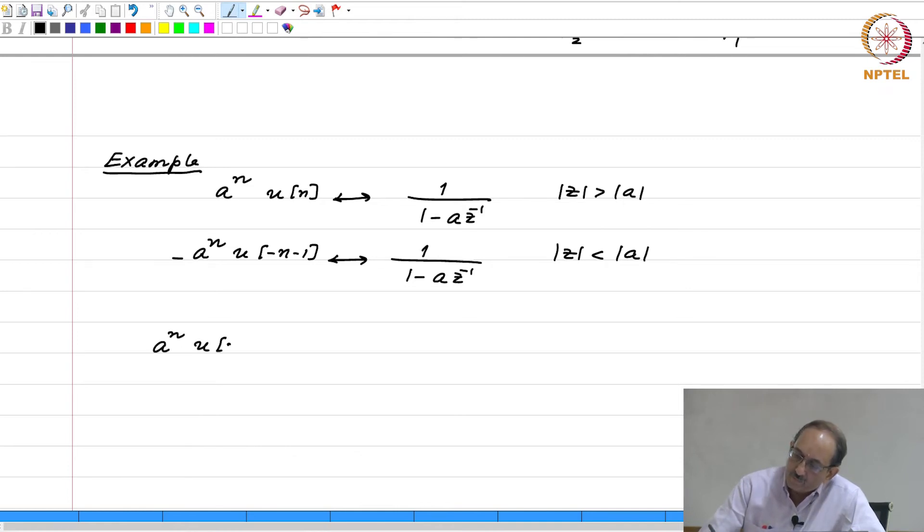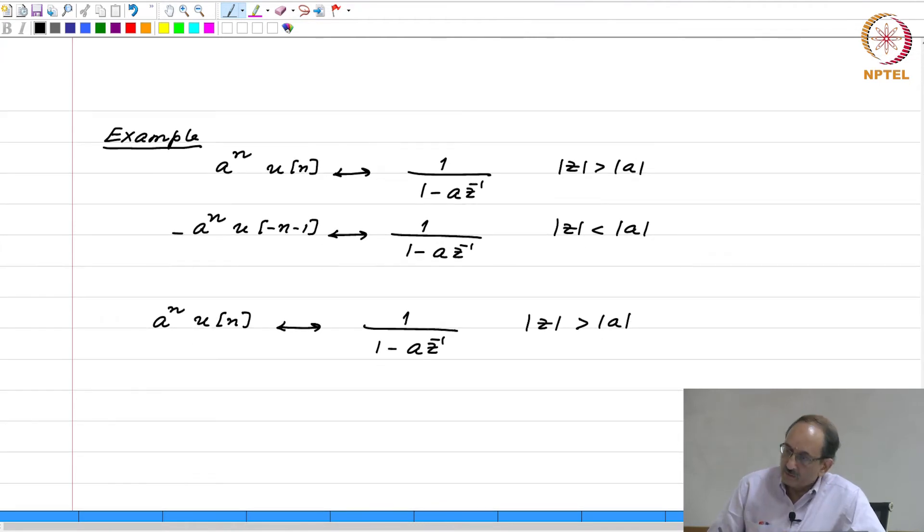So, a to the n, u n has 1 by 1 minus a z inverse mod z greater than this. Therefore, if you replace n by minus n, you have u of minus n. This is 1 by 1 minus a z and this is mod z less than 1 over mod a.